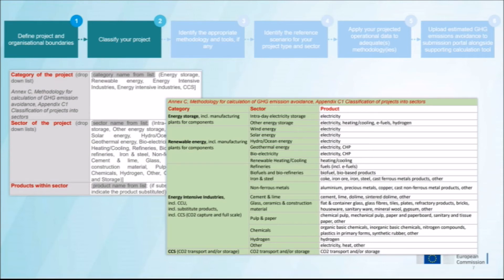We are also accepting applications where the final use is the main aim. For example, hydrogen used in ferries or in vehicles — that is also possible, and the final use in that case will determine the comparison with the reference case. If it is hydrogen used in ferries, then the reference case would be ferries run in the normal way.